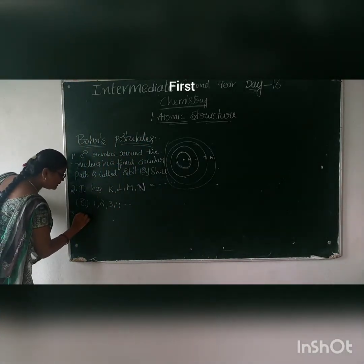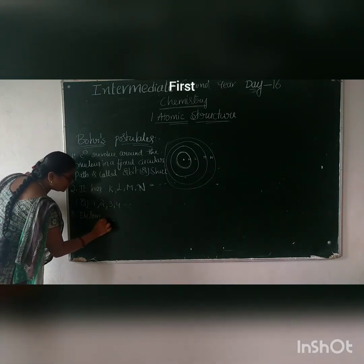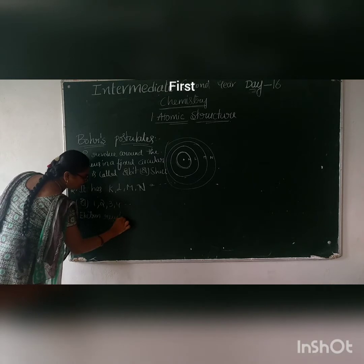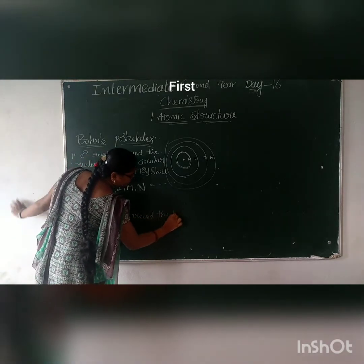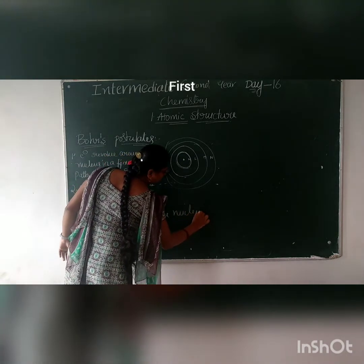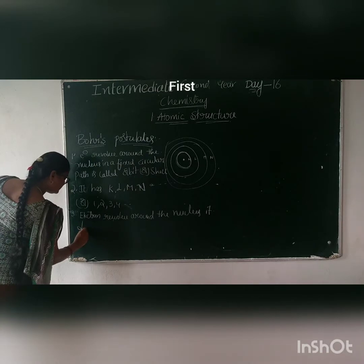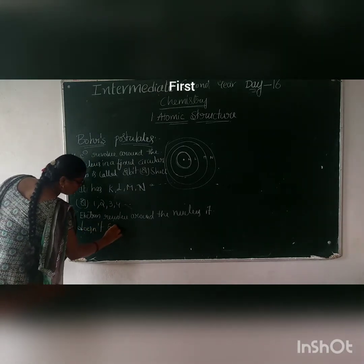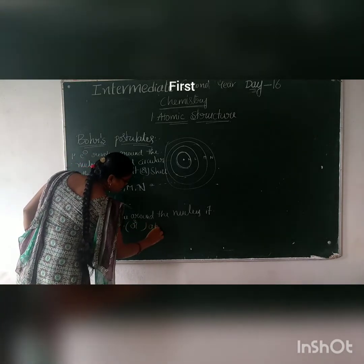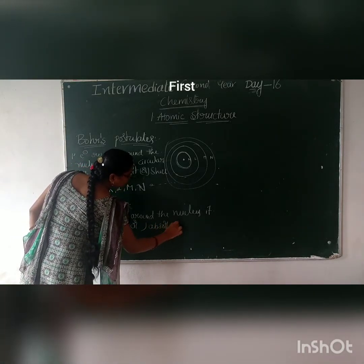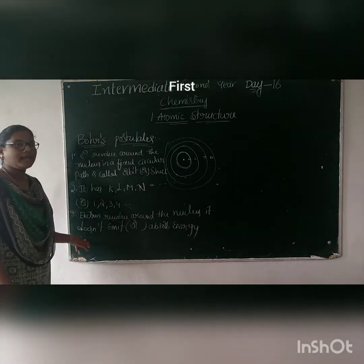So, the electron revolves around the nucleus. It does not emit or absorb energy. It does not lose or gain energy.